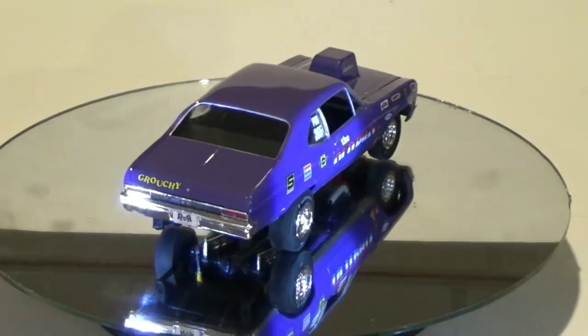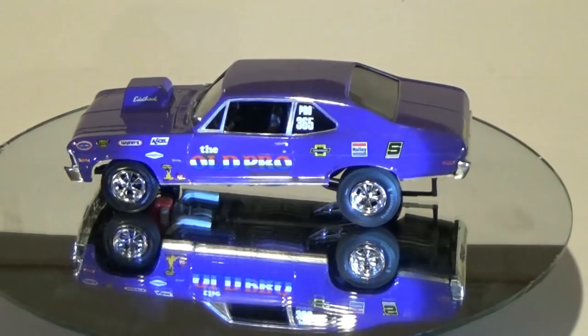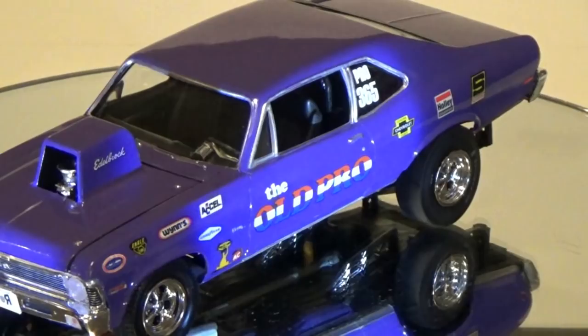The kit consists of 113 parts molded in white, clear, clear red, chrome, with vinyl tires and metal and plastic axles. The build is offered as either a stock, pro stock, or race version. You'll find there's a few things missing for the stock version, and for this build, I decided on the race version.